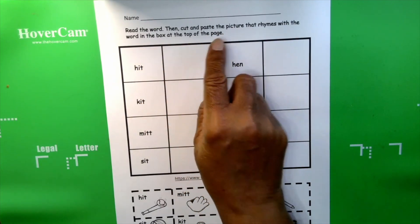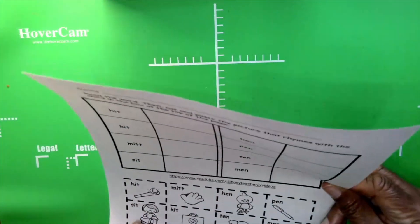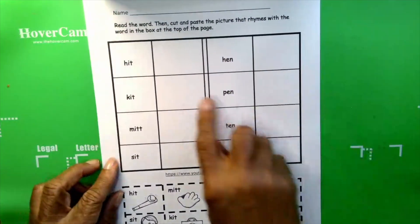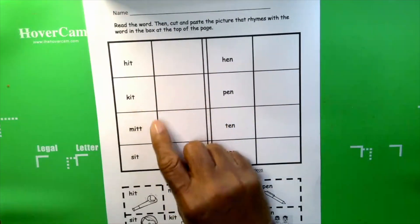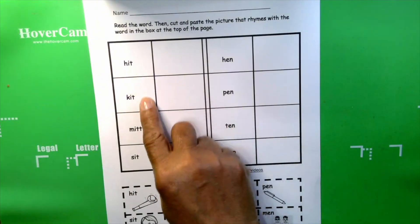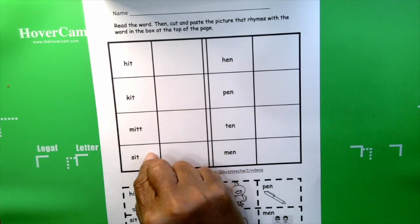And you know what I did boys and girls? I gave you clues to help you out. Okay, let's say the words. Hit, hit, hit, mitt, sit. All of these words are rhyming because they have the same ending sound.